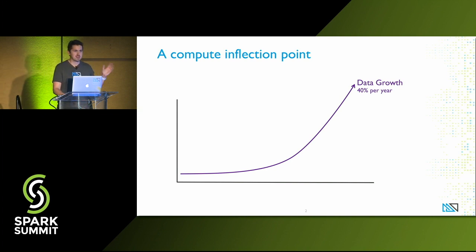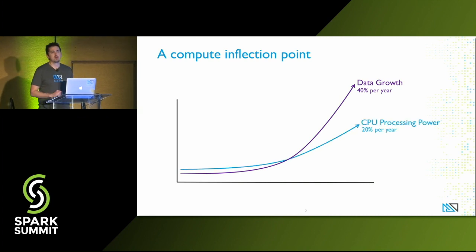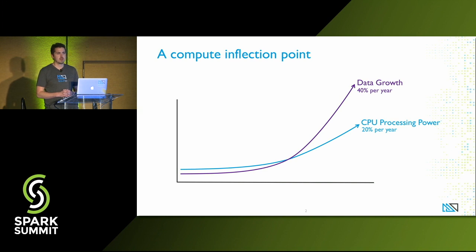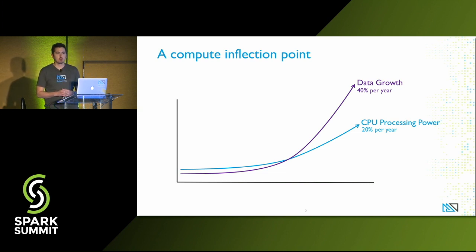Data is growing — data growth is through the roof. We're looking at roughly 40% year-over-year rate of data growth. Organizations are awash in data. CPU processing power is actually only increasing at 20% year-over-year. And these are top-line numbers — this is if you're using all of the AVX instructions from Intel and pulling basically every kind of performance trick in the book to extract the maximum performance of CPUs. In reality, people are probably seeing less than this. So you have this compute gap between the growth in data and the growth in CPU processing power.